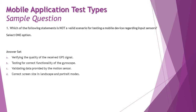We need to recall the different types of input sensors and how they can be tested. We have four options: A — verifying the quality of received GPS signals, which belongs to input sensors, so that is a valid test scenario. B — testing for correct functionality of the gyroscope, which is also an input sensor. C — validating data provided by the motion sensor; the name itself tells you it's a sensor. So none of A, B, or C should be selected as the 'not valid' option.